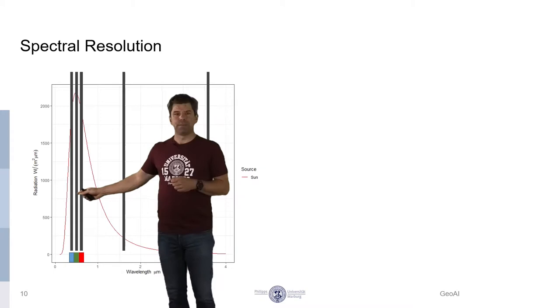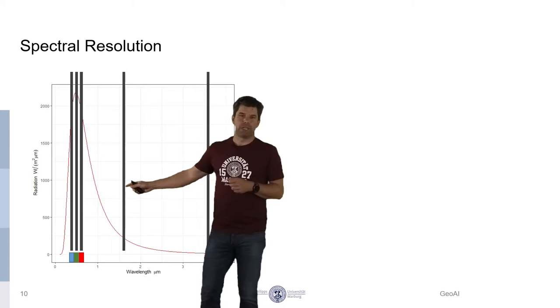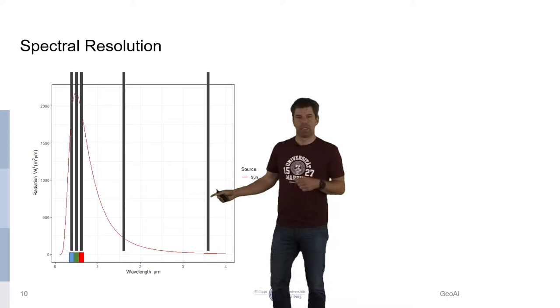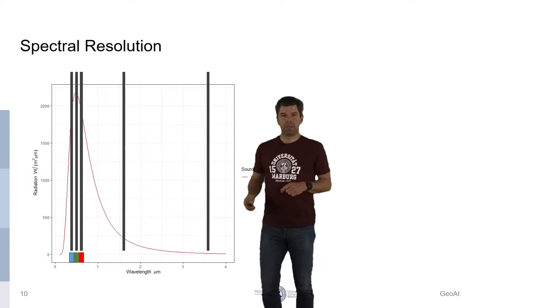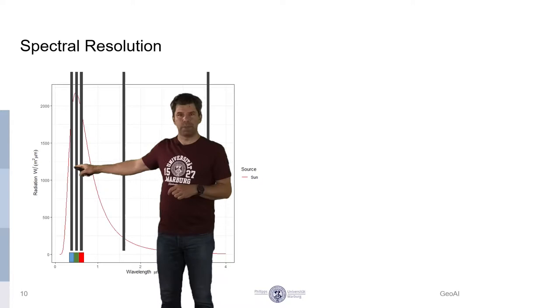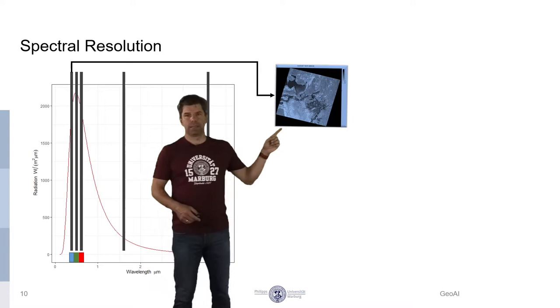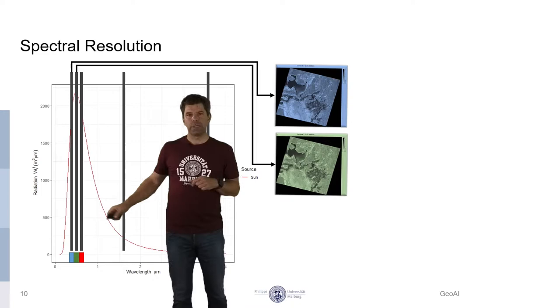For example, three channels here in the visible part of the spectrum, one channel around 1.6 micrometers, for example, so it is in the infrared, and one channel around 3.6 micrometers is also very common, very typical for contemporary remote sensing systems. And when we now use these three channels here in the visible spectrum, and when we use the blue channel and color it in blue, and when we use the data and the image from the green channel and color it in green,